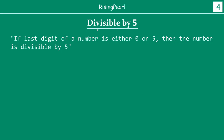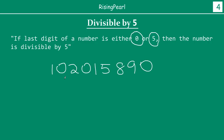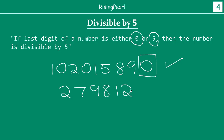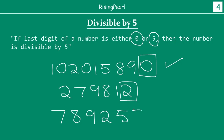Divisibility by 5: if the last digit of any number ends with 0 or 5, then that entire number is divisible by 5. For example, 1020158890 — is this big number divisible by 5? Yes, it is, because it ends with 0. On the other hand, 279812 — is this number divisible by 5? No, it is not. It ends with 2; in order to be divisible by 5, it has to end with 0 or 5. Similarly, 55025 — is this giant number divisible by 5? Yes, it is, because the last digit is 5.